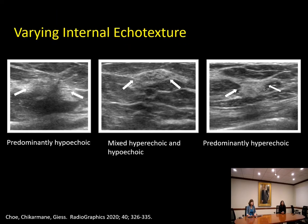Now we'd like to talk with imaging about varying internal echotexture. That can range from predominantly hypoechoic, like the image here on the left, to a mixed hyperechoic and hypoechoic area — this lesion oriented parallel to the normal planes of the breast — and predominantly hyperechoic, with possibly smaller hypoechoic areas internally.